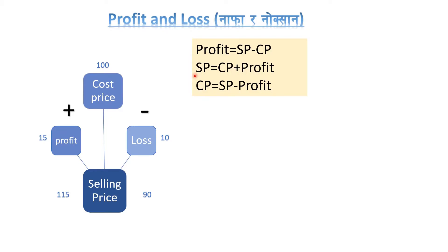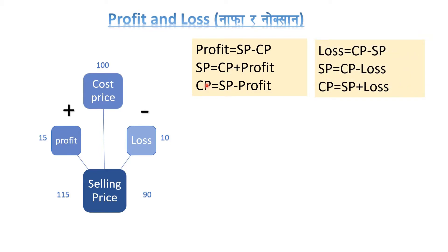Selling price (SP) which relates to profit or CP. We will get the profit using this relationship. The formula: if cost price is less than selling price there is a profit, and if cost price is more than selling price there is a loss.